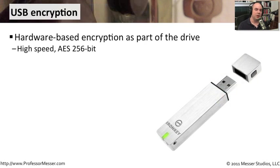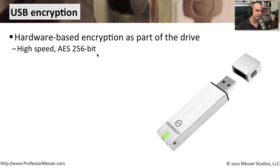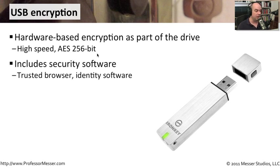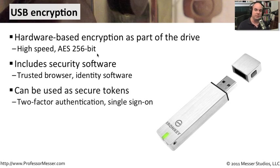Mobile USB data drives are also getting very smart. There is hardware encryption built right into some of these USB keys — AES 256-bit, high-speed encryption built as part of the USB key itself, so you can be assured that data on the key is always encrypted. Security software is also built in; many come with a trusted browser so you can browse the internet securely. They can also be used as a secure token — a pseudo-random number generator for two-factor authentication or single sign-on.